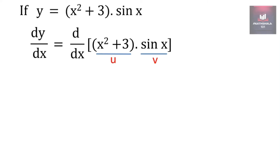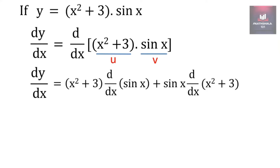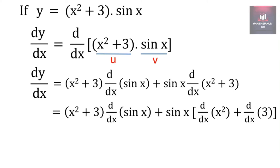Applying the uv rule gives u times derivative of v plus v times derivative of u, that is x square plus 3 times the derivative of sin x, plus sin x times the derivative of x square plus 3. For the derivative of x square plus 3, we take the derivative of individual terms since they are separated by a plus. So this becomes x square plus 3 times d by dx of sin x, plus sin x times the derivative of x square plus the derivative of 3.